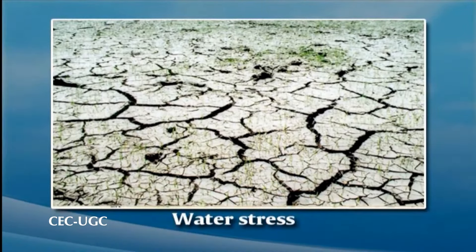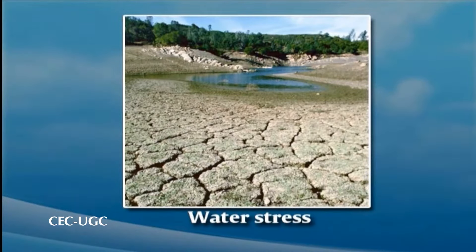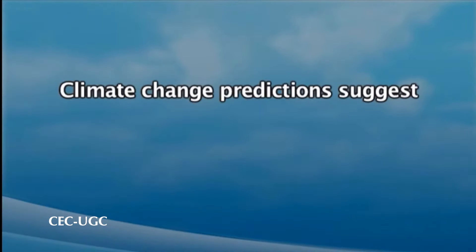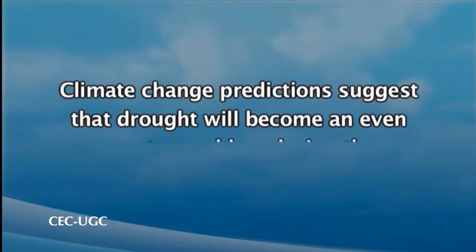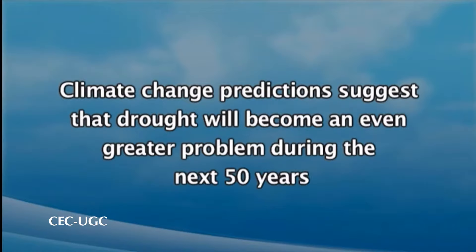Climate change predictions by the Intergovernmental Panel for Climate Change or the European Environmental Agency suggest that drought or water scarcity will become an even greater problem during the next 50 years. Understanding soil water uptake patterns by plants and the associated plant responses to water loss during drought can potentially help us explain differences among species in productivity, survival and distribution, hence reducing water use for irrigation and increasing water use efficiency.